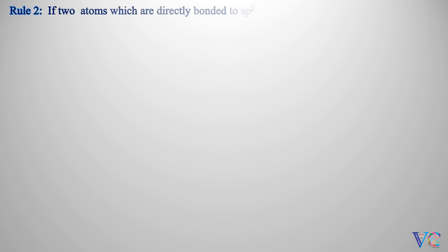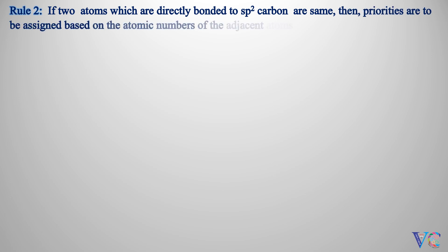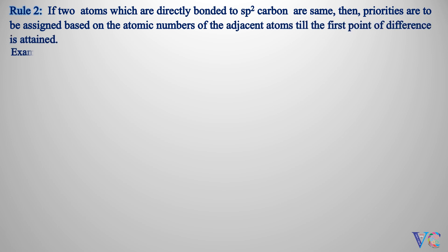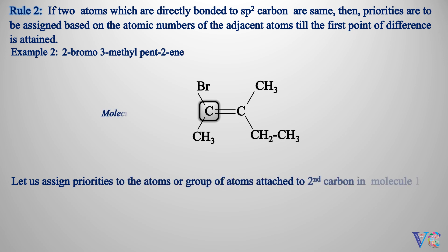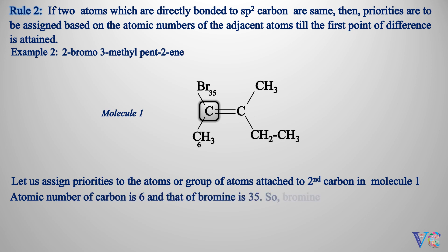Rule 2: If two atoms which are directly bonded to the sp2 carbon are the same, then priorities are to be assigned based on the atomic numbers of the adjacent atoms, till the first point of difference is attained. Example 2: 2-bromo-3-methylpent-2-ene. Let us assign priorities to the atoms or groups of atoms that are bonded to the second carbon in molecule 1. Atomic number of carbon is 6 and that of bromine is 35, so bromine gets higher priority while methyl group gets lower priority. But the atoms that are directly bonded to the third carbon are the same — both are carbon atoms with atomic number 6.